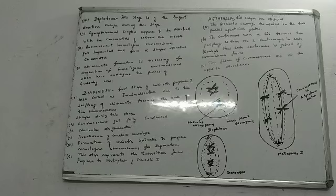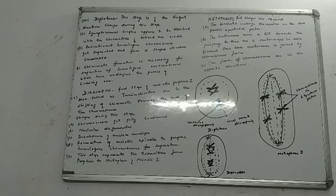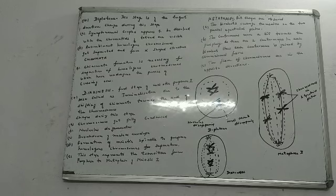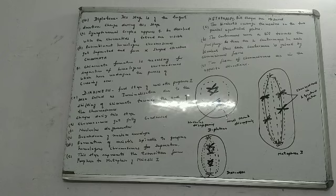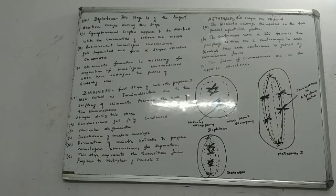So the three main things in diprotein: first, the synaptolimum complex dissolves while the chromatids are still visible. Second, the recombinant homologous chromosomes get separated, forming an X-shaped structure called chiasmata. This formation is necessary for separation of the homologous chromosomes which have undergone crossing over — since crossing over is already done, these chromosomes need to separate, and it is for this reason the X-shaped structure is formed.